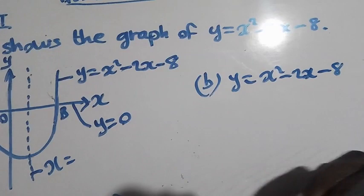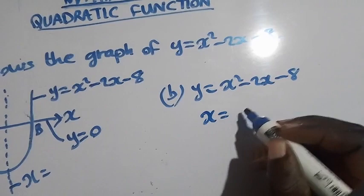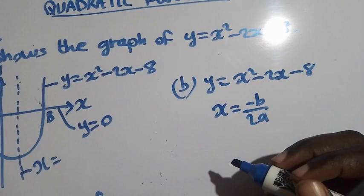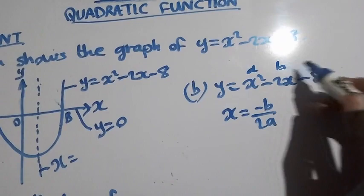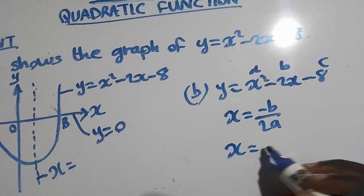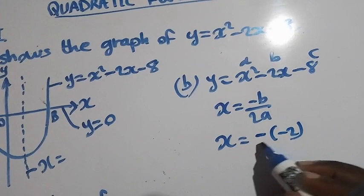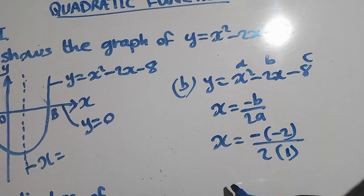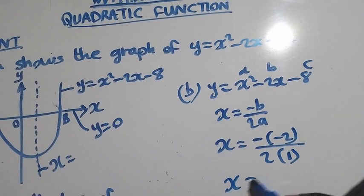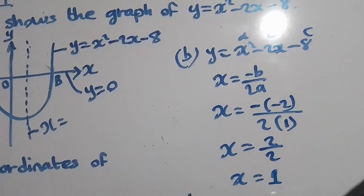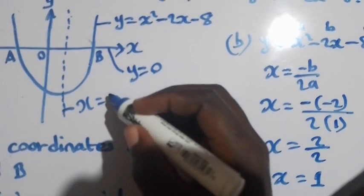To find the symmetric equation, we apply the formula x equal to negative b over 2a. This is the formula to find the line of symmetry. Here a, b, and c are the coefficients. So x equal to negative b, where b is the coefficient of x which is negative 2, over 2 times the coefficient of x squared which is 1. Negative times negative gives positive 2, over 2 times 1 is 2, so x equal to 1.